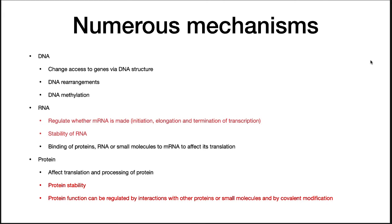There are numerous points in gene expression where regulation can occur. At the DNA level, changing the structure of the chromosome can allow or limit access to a gene. DNA rearrangements can add or remove a promoter from a gene. Also, DNA methylation may encourage or inhibit the expression of genes. Gene expression can be modulated by regulating whether mRNA is made by influencing initiation, elongation, or termination of messenger RNA synthesis.